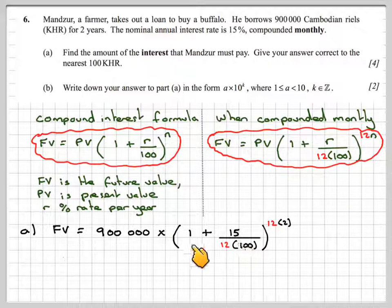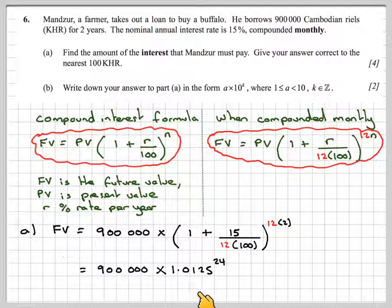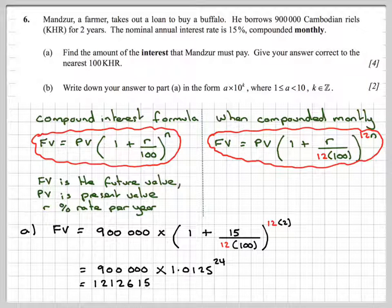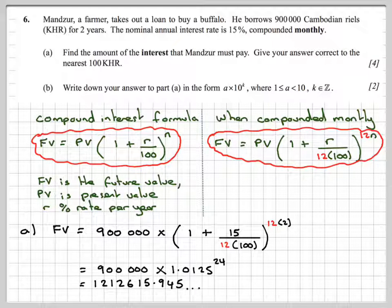We get 900,000 × 1.0125^24, which equals 1,212,615.945 Cambodian riels.